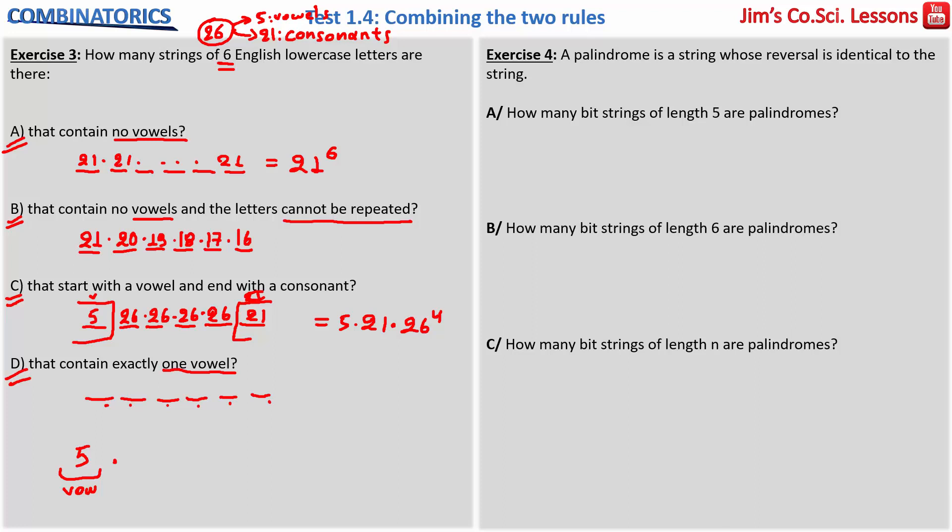So there are 6 available options for the position where the vowel will be placed. And now remember that when we are applying the rule of product, we're thinking about tasks. First task was about to pick the vowel. The second task is the position of the vowel.